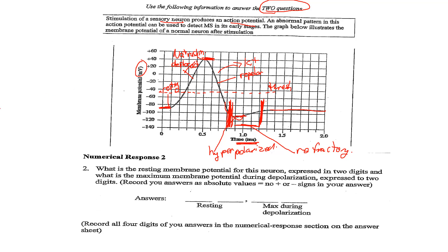Numerical response, we love these questions, don't we? They're saying what is resting membrane potential for this particular neuron, express in two digits. And what is the maximum membrane potential during depolarization? They say express to two digits as well, record your answers as absolute values, you're not going to use any positive or negative signs in your answer. That's important. A lot of people try to squeeze this in. And it's often machine marked. So if you put a positive or a negative in there, it's going to see that as something that's wrong. So you're skipping the positive or negative.